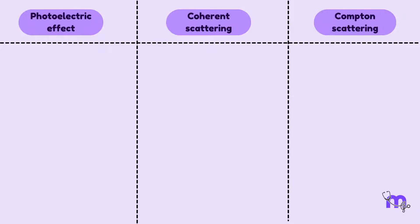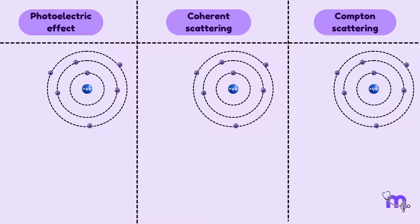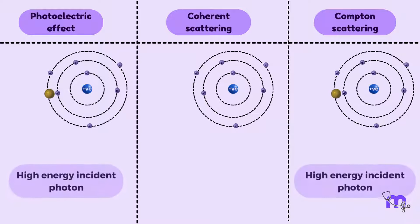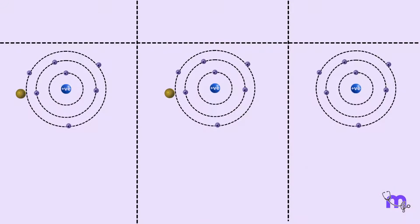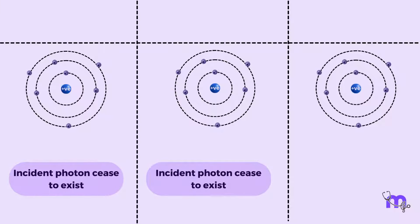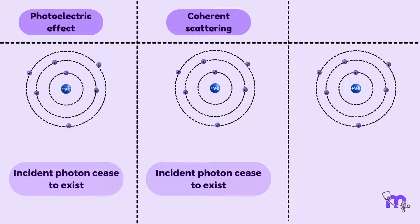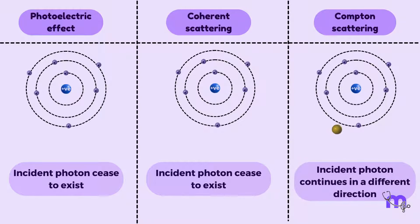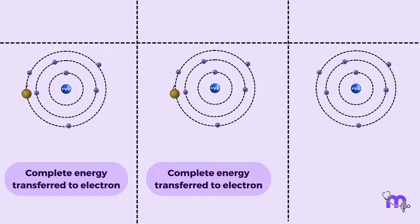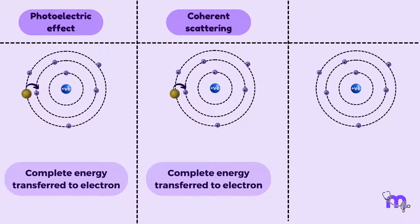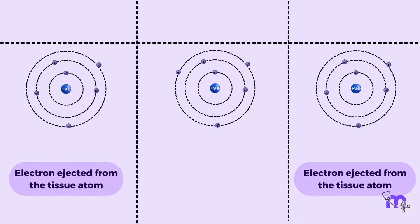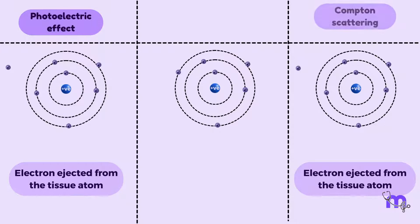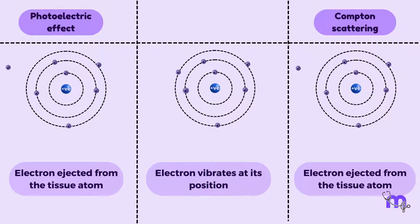Now let us compare the three types of X-ray interactions at an atomic level. Photoelectric effect and Compton scattering need a high energy incident photon, while coherent scattering involves a low energy photon. Once these photons transfer energy to the electron, they cease to exist in both photoelectric effect and coherent scatter, whereas in Compton scatter the photon continues in a different direction. Complete energy of the incident photon is transferred to the electron in both photoelectric and coherent scatter, whereas only a fraction of energy is transferred in Compton scattering. Once energy is received, the electron from the tissue atom is ejected out in photoelectric and Compton scatter, whereas it vibrates in its position in coherent scatter.